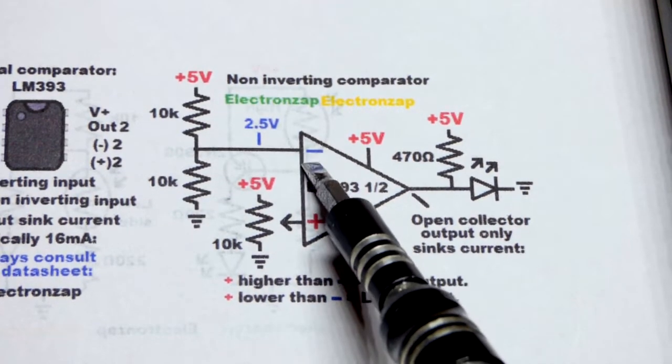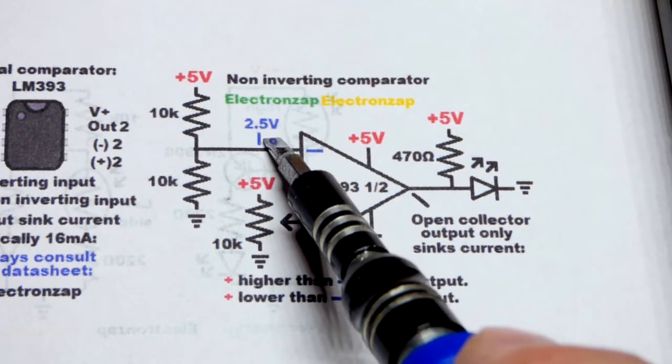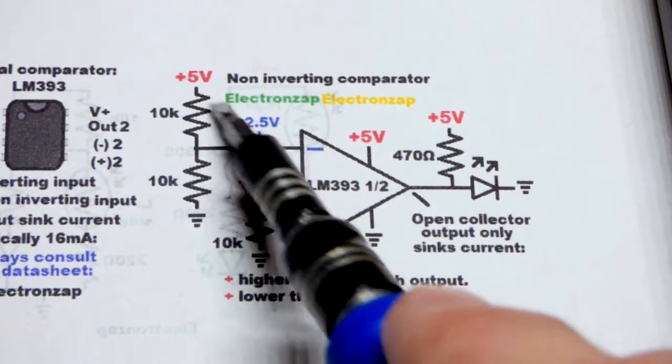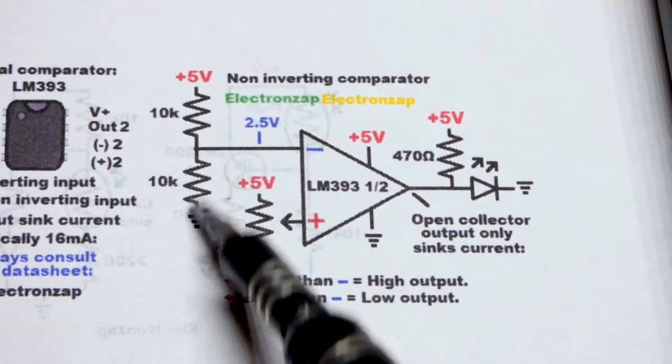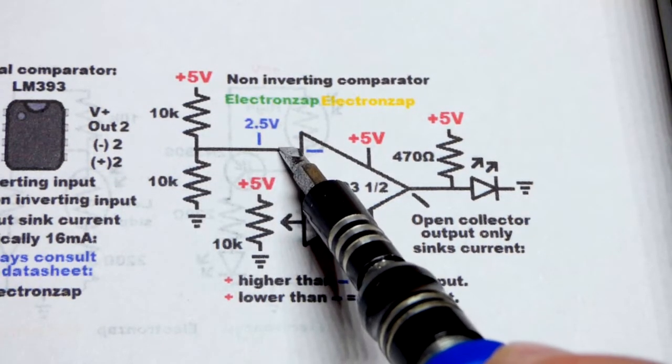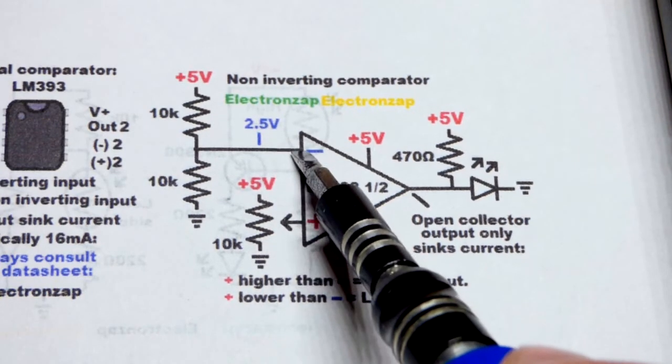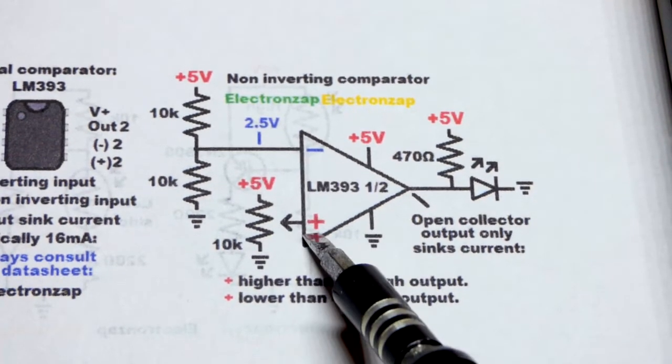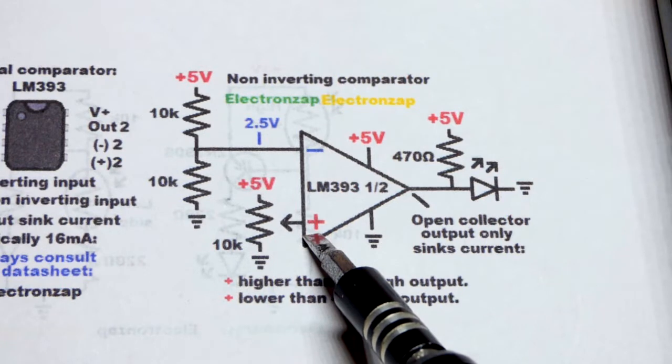So we have our inverting input. This is just like the op amp where we're going to set 2.5 volts. We're using a 5 volt power supply. Two equal value resistors wired as a voltage divider will give us half of the voltage, 2.5 volts right there.